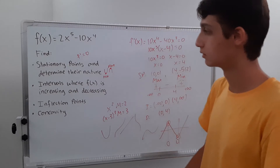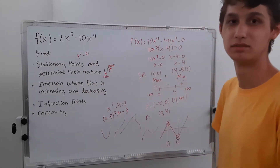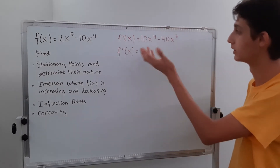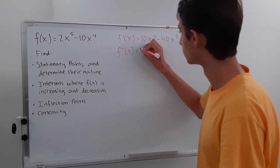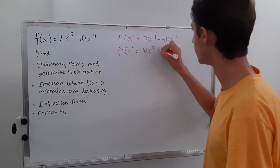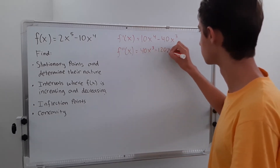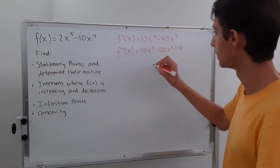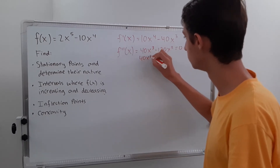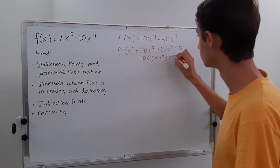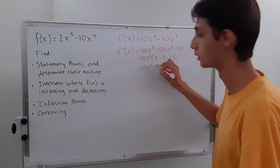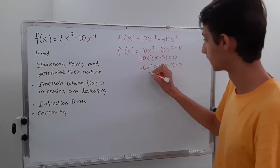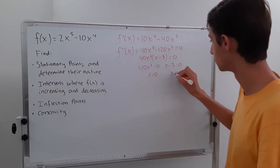That covers everything using the first derivative — stationary points and increasing/decreasing intervals are done. To find the second derivative, all we have to do is take the derivative of our first derivative, which gives us 40x cubed minus 120x squared.